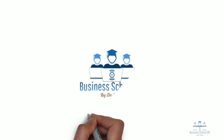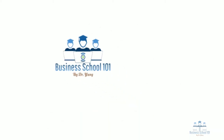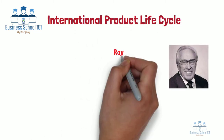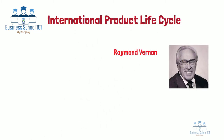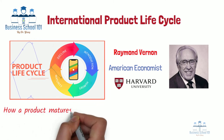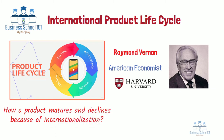Hello everyone, welcome to Business School 101. The International Product Life Cycle Theory was authored by Raymond Vernon, an American economist from Harvard University in the 1960s, to explain the cycle that products go through when exposed to an international market. The cycle describes how a product matures and declines because of internationalization.